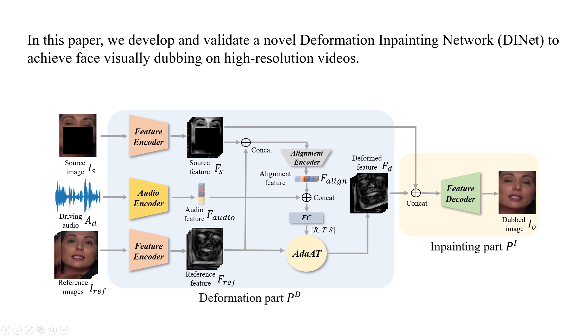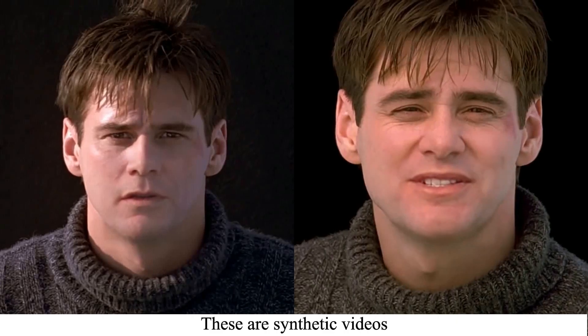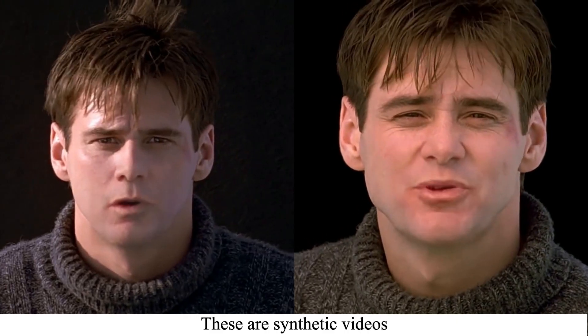In the in-painting part, one feature decoder is used to merge features of the source face and deformed results to in-paint the pixels in the source mouth region. We first show our results on 1080p videos.